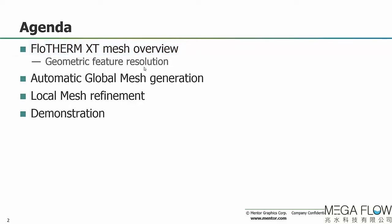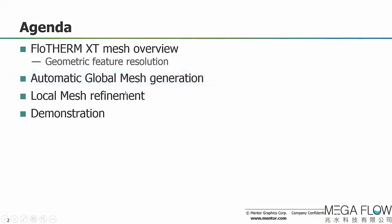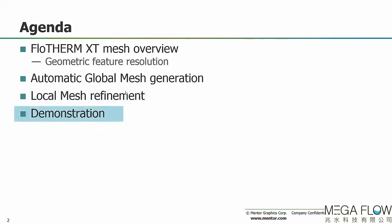Then we're going to jump into discussing the process of meshing in Flowtherm XT, beginning with the automatic global mesh generation, followed by local mesh refinement — refining the mesh in discrete areas deemed important for heat transfer and fluid flow. Lastly, we'll look at two demonstrations that outline the process of meshing in Flowtherm XT.